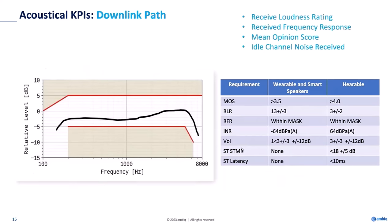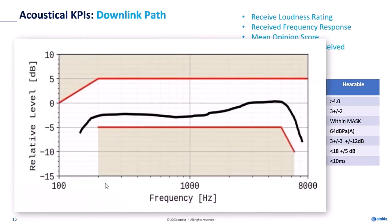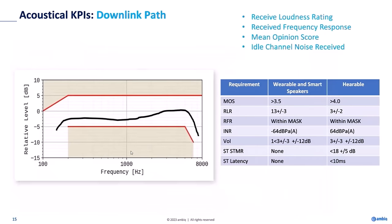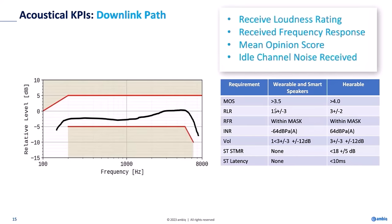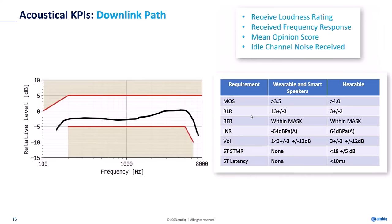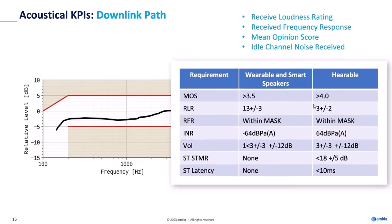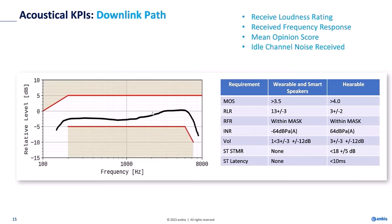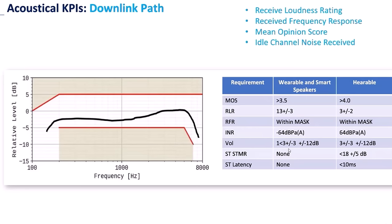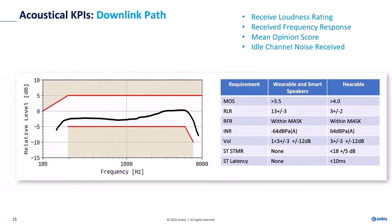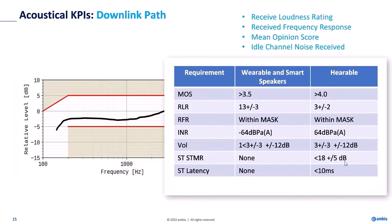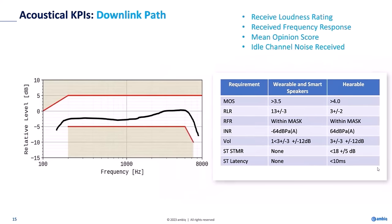The typical downlink requirements come from 3GPP TS 26.131 and 26.132, with masks for narrowband, wideband, and super-wideband. For wideband receive loudness, wearables need 13 ±3 dB and hearables 3 dB ±. The device shall meet the specified frequency mask. Idle channel noise requirements, volume settings, and sidetone masking ratio (SMR) are also specified — sidetone for headsets is 18 ±5 dB. Latency for downlink must be under 10 milliseconds to avoid echo perception.